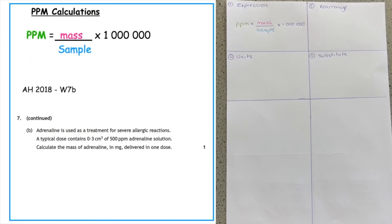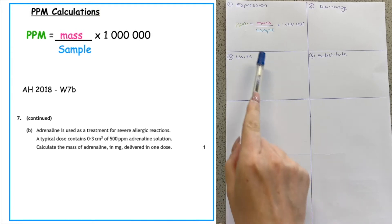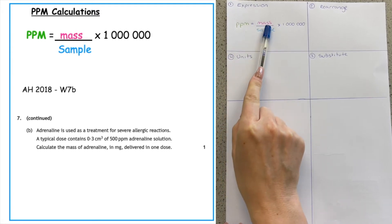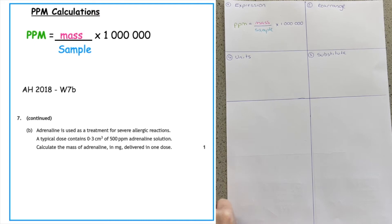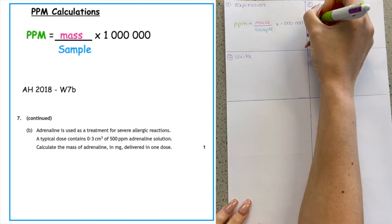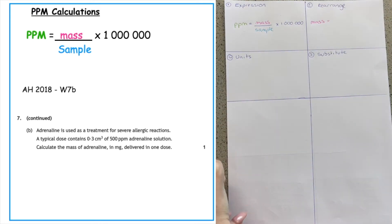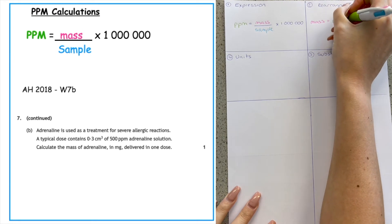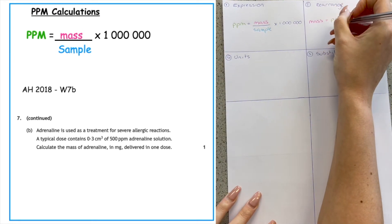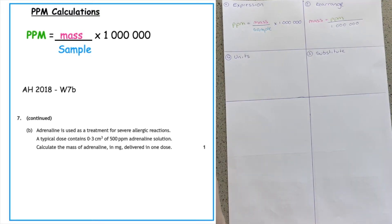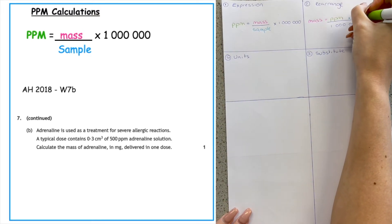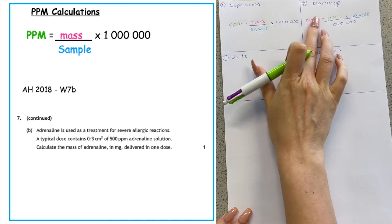Here is an example from the Advanced Higher 2018 written paper, question 7b. When scanning the question I can see PPM, so the first thing I do is write down my expression: parts per million equals mass over sample, times by one million. Reading the question, it asks me to calculate the mass of adrenaline — so mass is my subject. I rearrange so that mass equals parts per million over one million, then times by the sample.